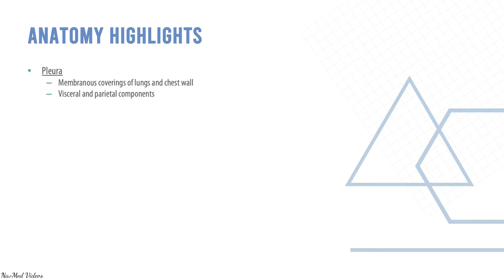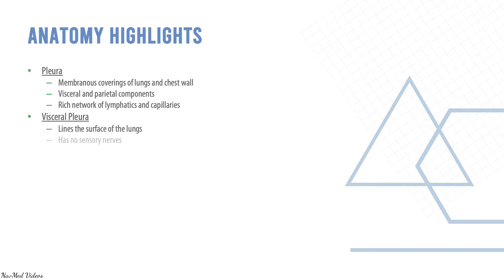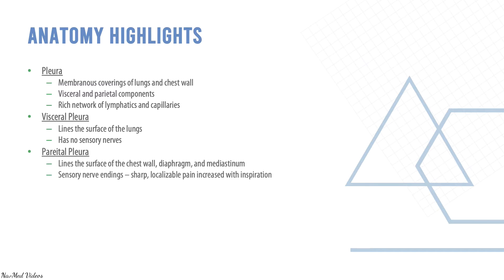The pleura is the membranous covering of the lungs and the chest wall. It has a parietal pleura and a visceral pleura — two components. It has a rich network of lymphatics and capillaries in the visceral pleura. The visceral pleura lines the surface of the lungs — it's called visceral because it lines an organ. It does not have any sensory nerves. The parietal pleura lines the surface of the chest wall, diaphragm, and mediastinum.